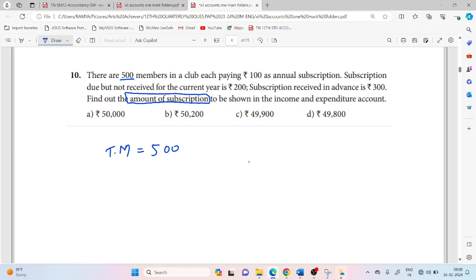Next, you can find this. If you pay the annual subscription, it is 100. So, 500 into 100, how many are you? 50,000.